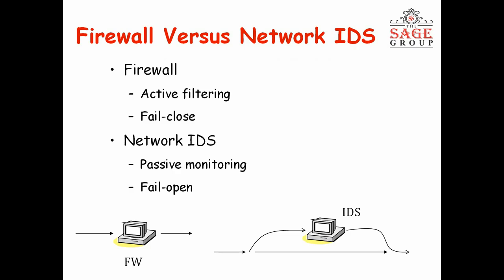If we are using a bank as an analogy, you cannot enter certain areas without authorization. The door grill and the guard act as the firewall. When using network IDS, it is passive monitoring. It usually works in open conditions. Active filtering is what the firewall does — it checks user information as it passes through.